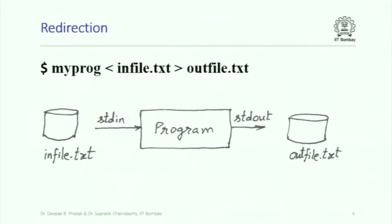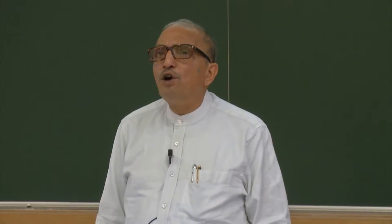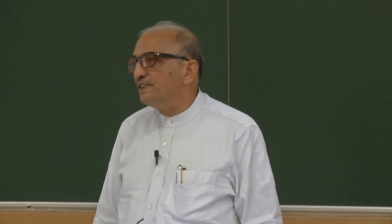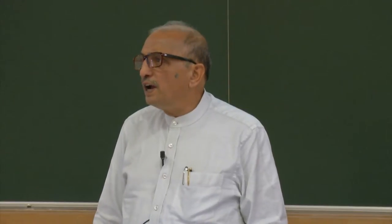Redirection can be only for input or for output, not necessarily for both. There is actually a third standard file opened by the operating system for each C++ program that executes, called stderr or standard error file. The operating system uses this file to write all error messages, and you can actually write to stderr.